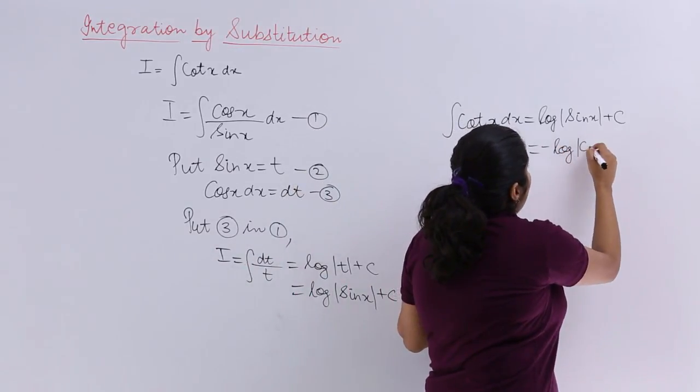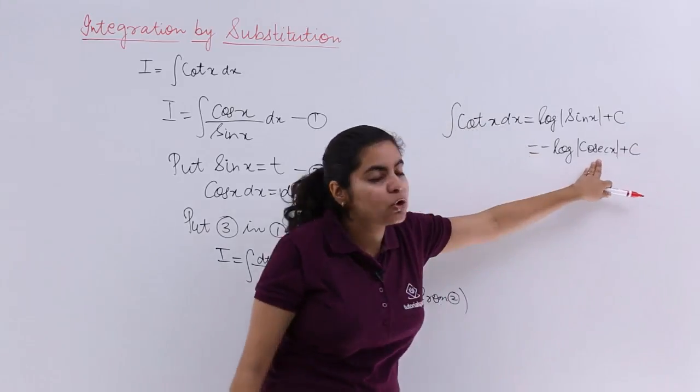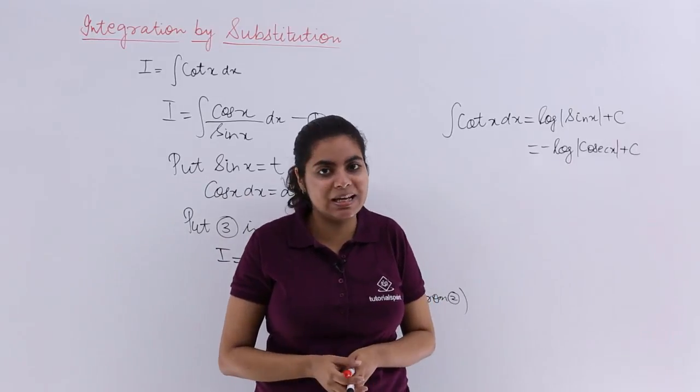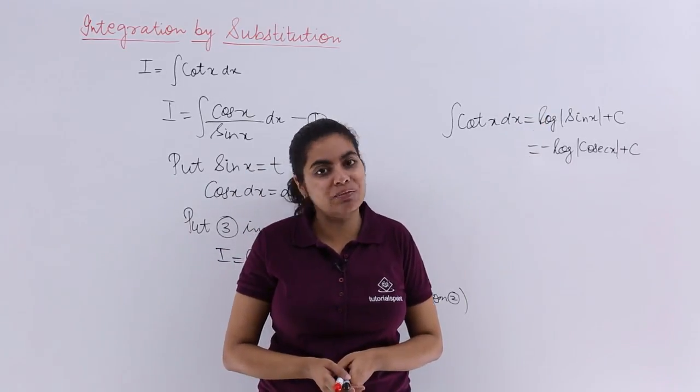So it is minus log cosecant x plus C, wherein cosecant is 1 by sin—that is minus and minus becoming plus. So both ways are correct, and these both are the answers to the evaluation of this integral.